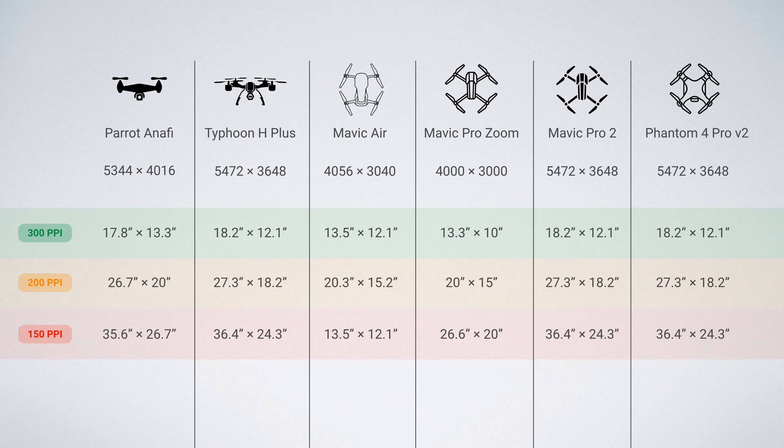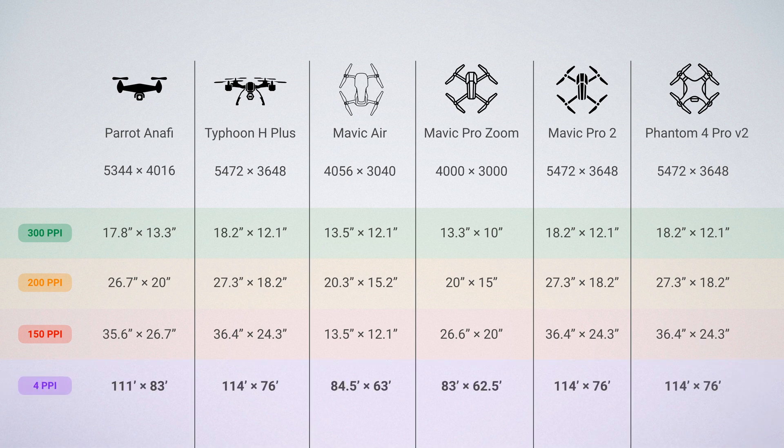If we calculate print size using 4 as the PPI, most drones can support printing huge images that are about 83 feet by 62 feet or larger, which is plenty large enough for a billboard or other use case.